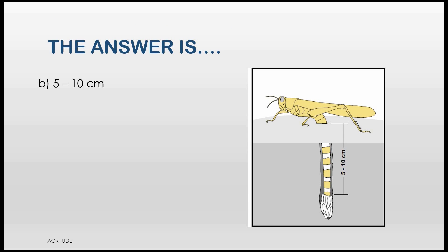The answer is B, 5-10 cm. Female locusts can stretch their abdomen to lay eggs deeper into the soil. That's why they can only lay eggs in sandy soils.